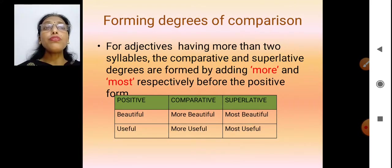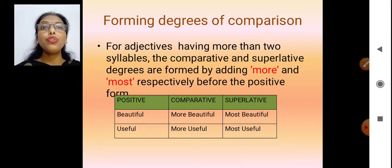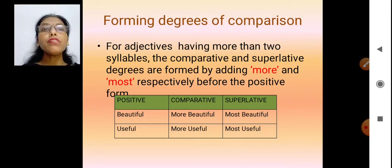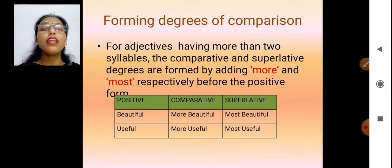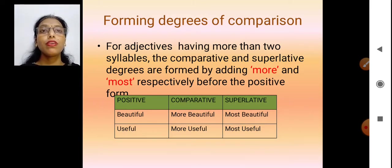Now if there are more than two syllables in the word, we use 'more' for the comparative degree and 'most' for the superlative. Suppose I say 'intelligent' — in comparative it will be 'more intelligent', and in superlative it will be 'most intelligent'. So the three degrees are: intelligent, more intelligent, and most intelligent. This applies when there are more than two syllables in the word.